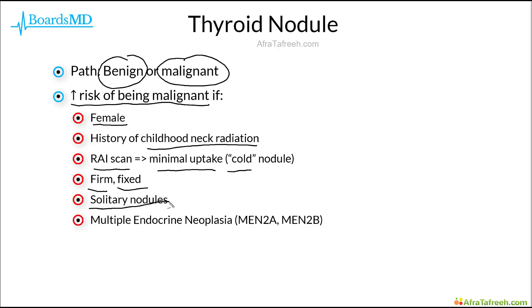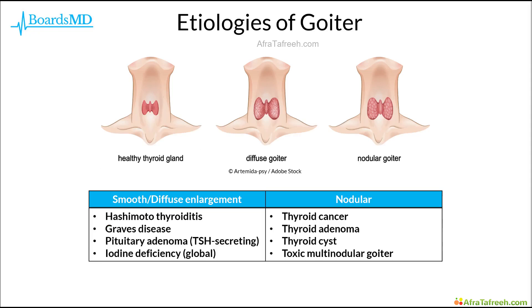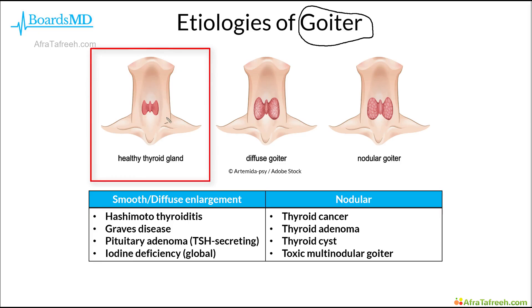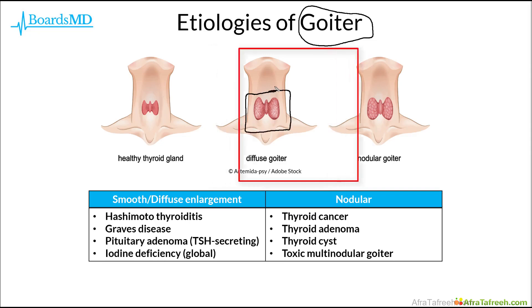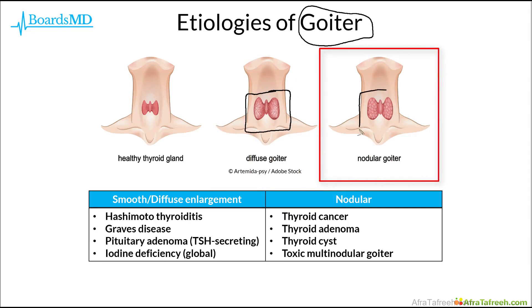Additionally, if a patient has multiple endocrine neoplasia, especially MEN-2A or MEN-2B, these patients have an elevated risk of medullary thyroid carcinoma and are placed at higher risk of having a malignancy. As we move forward, we also need a differential in mind when we see a patient with a goiter — an enlargement of the thyroid gland appreciated on physical exam. We can have a diffuse goiter with smooth and uniform enlargement, or a nodular goiter with one or more nodules on physical exam within the thyroid gland.